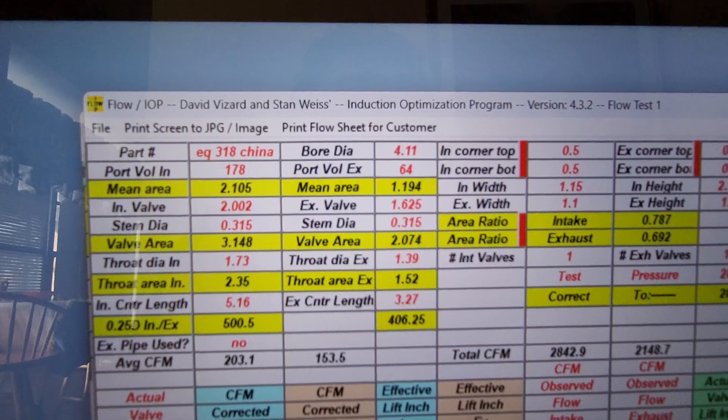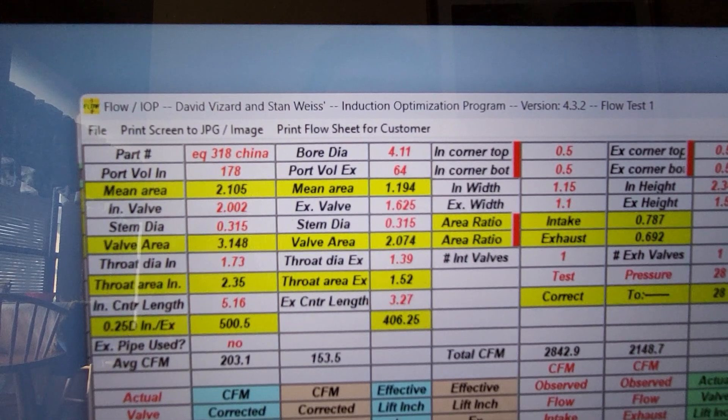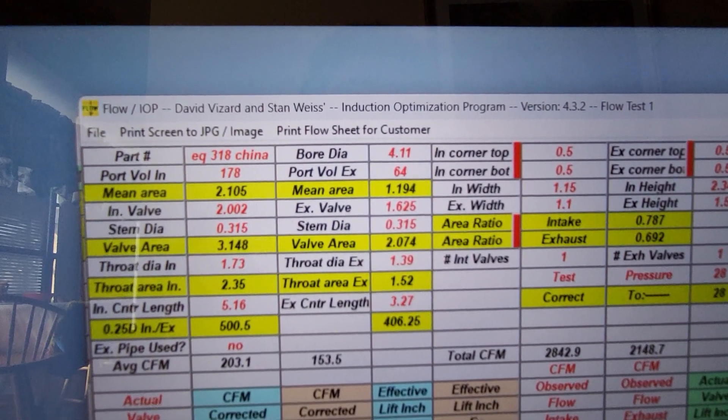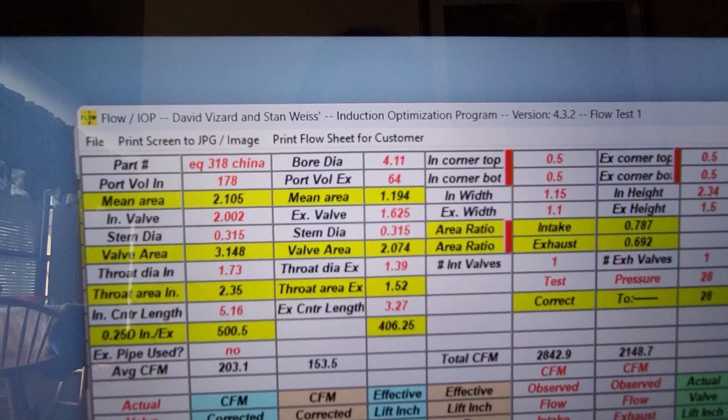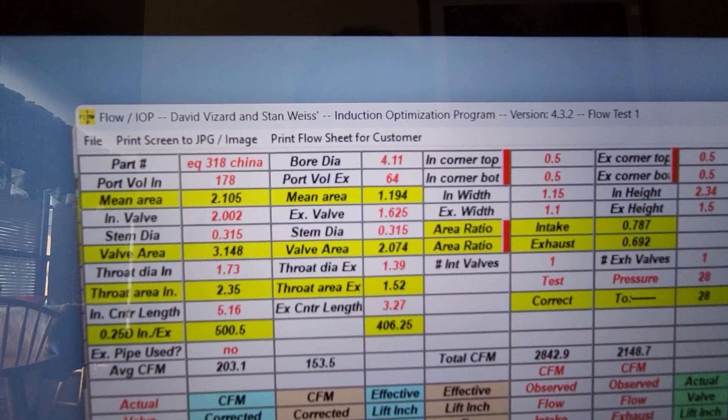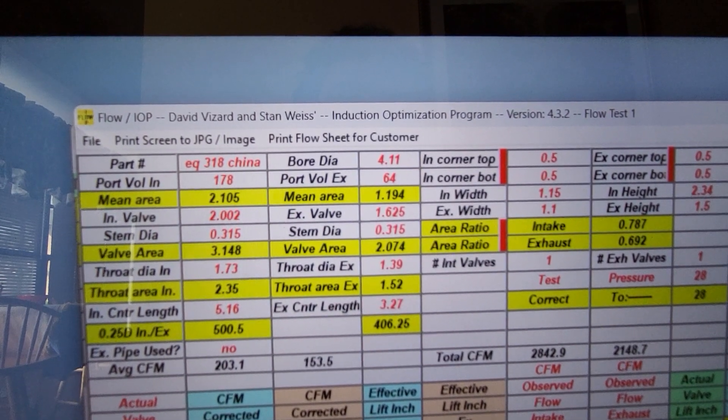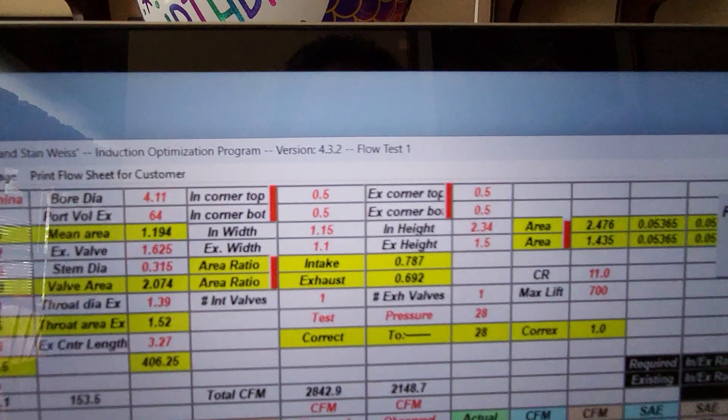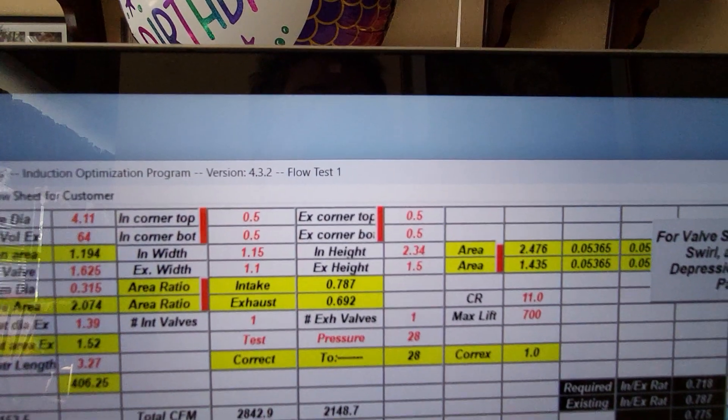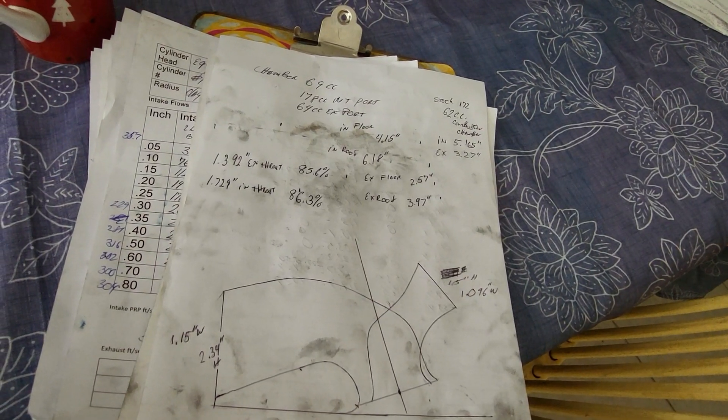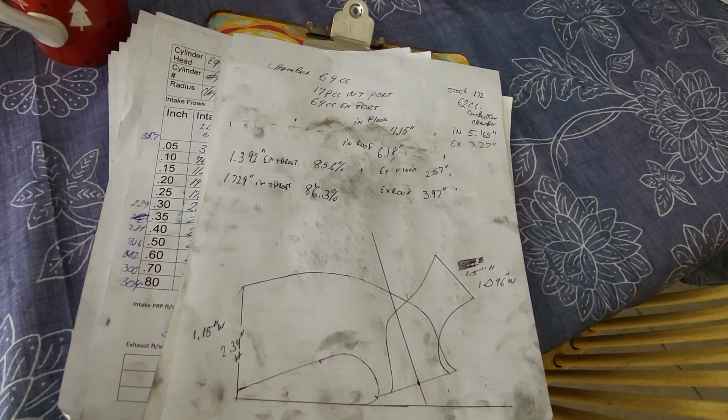Exhaust port 64, quite a small exhaust port, especially when you look at the exhaust port length which is 3.27. It's a longer port and not really big. When we start going through the air speeds and the flow saturation, you'll definitely see what I'm talking about. Exhaust valve is 1.625, stem 0.315. Everything is on this page, all the info, all the shapes.